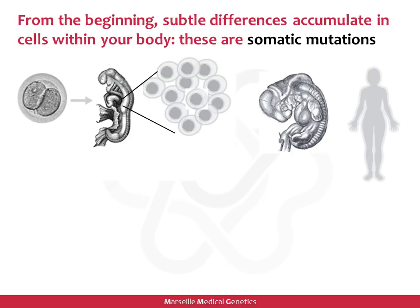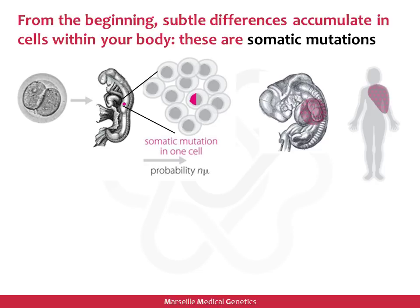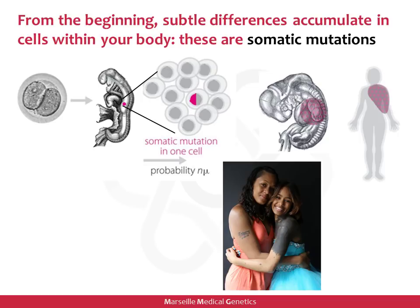From the very beginning of development, just after fertilization in the first cell division, there are subtle differences that start to accumulate in cells — these are called somatic mutations. Soma means body, and mutation means change. As a single mutated cell grows, divides, and occupies a progressively larger part of the developing embryo and fetus, nevi develop after birth and grow proportionally with the body, staying within the cells descended from that original mutated cell.